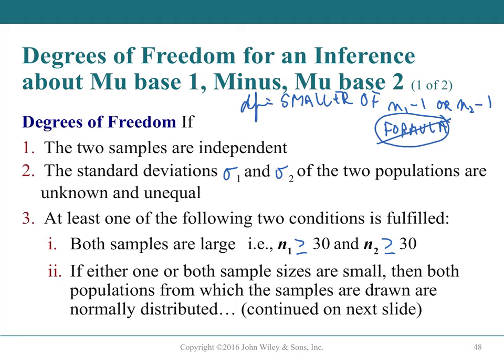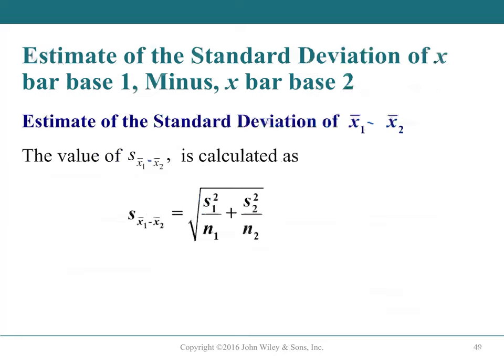Section 10.3 conditions: two independent samples; standard deviations unknown and unequal (safe default assumption); and both sample sizes ≥ 30 or both populations normal. If either sample is small and the problem doesn't state normality, you'd need advanced methods outside this course.